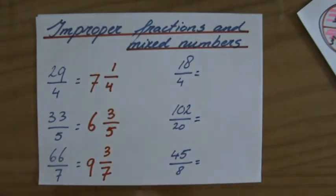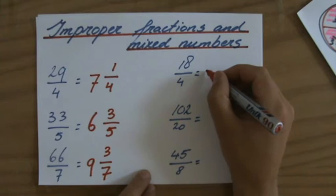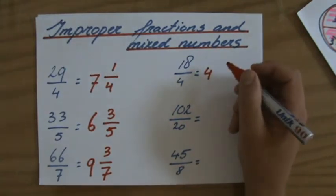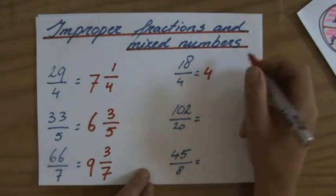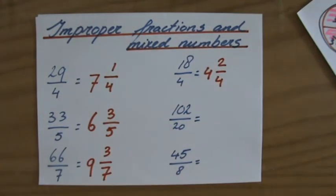18 over 4. 4, 8, 12, 16. So that is 4 whole ones. What is my remainder? 18 minus 16 is 2. So that's 2 over 4. Is that my final answer? 4, 2 over 4? No.